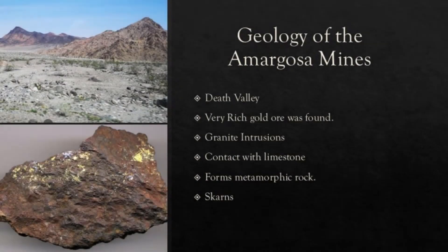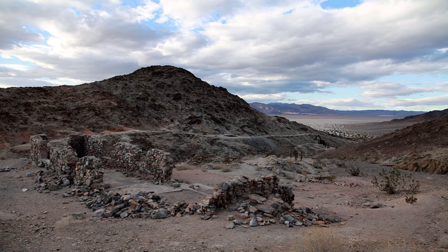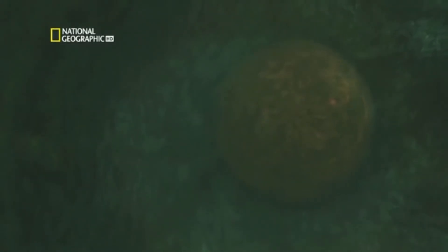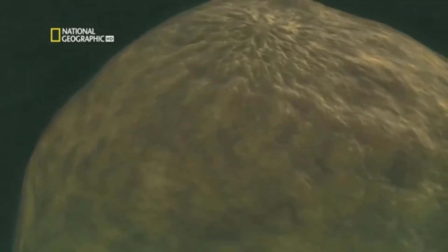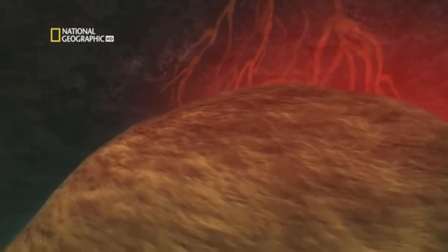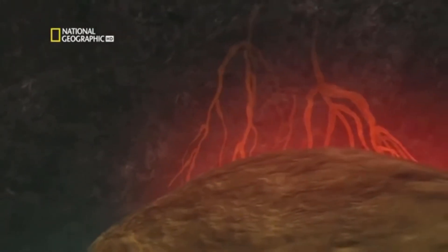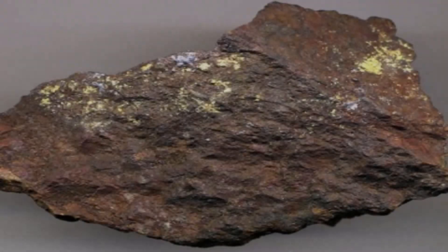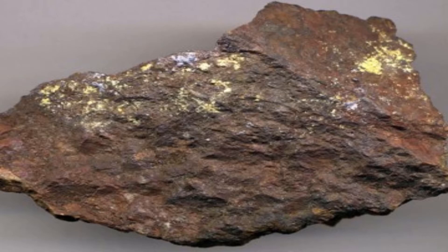I also want to include the geology of a specific gold bearing area near Death Valley National Park — the Amargosa mines in the Salt Spring Hills. Large granite intrusions beneath the earth's surface are responsible for the gold in this area. These granitic masses force their way up and eventually come in contact with limestone, forming a contact zone. This contact zone changes the limestone into metamorphic rock.